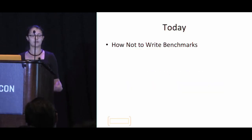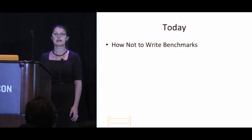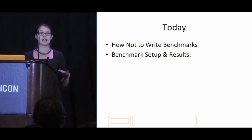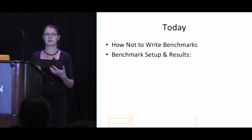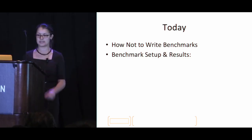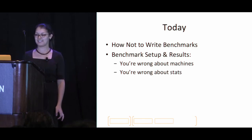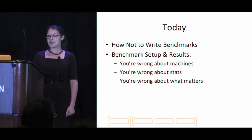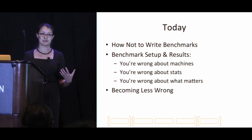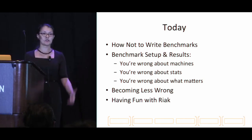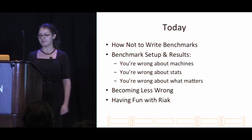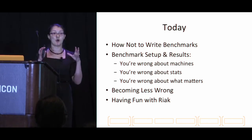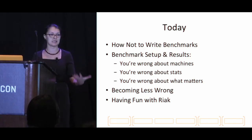Today the talk will be in four parts. First, we'll talk about how not to write benchmarks and look at a contrived example. Then we'll break it down by looking at common pitfalls in setting up and interpreting benchmarks — specifically three aspects: you're wrong about machines, you're wrong about stats, and you're wrong about what matters. Then we'll talk about how to become less wrong. And last, to conclude, we'll have some fun with Riak.